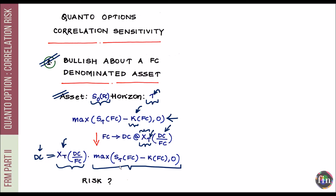Is there any risk involved here? Even if the investor's views turn out to be correct — the Nikkei appreciates, the call lands in the money, and he profits — what if at the time of converting the JPY payoff into USD, the XT goes down? XT going down means the yen has depreciated, so the price of one yen in USD goes down. If Nikkei goes up but the yen depreciates, the payoff finally received in USD suffers.